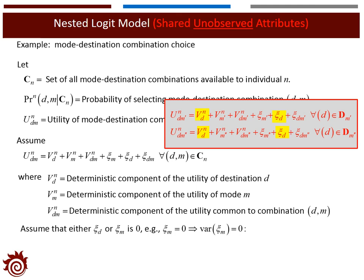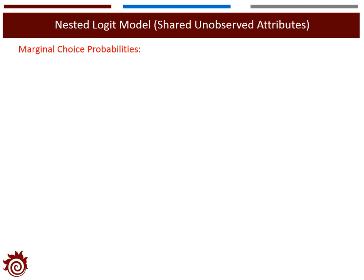In the analysis, without loss of generality, we can assume that either xi_d or xi_m is zero, allowing us to eliminate one random term from the utility definition. For the nested logit model with shared unobserved attributes, we want to find the marginal, conditional, and joint choice probabilities. We will first find the marginal probability — the probability of choosing destination d. The derivation is very complicated; the course notes contain the detailed step-by-step derivation, so in the video we will skip the details and jump to the final expression.